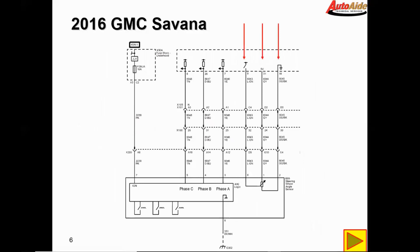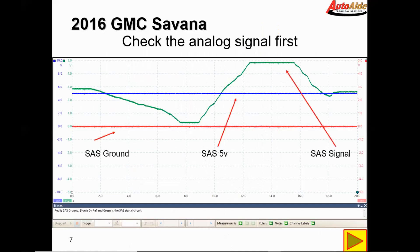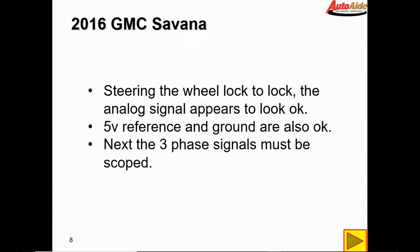Our first three circuits to scope are the 5 volt reference, ground circuit, and signal circuit. The steering angle sensor ground appears to be okay, the 5 volts is sitting right at 5 volts, and the signal appears to track good. Around 2.5 to 3 volts is center. As I turn the steering wheel to right lock it comes all the way down to about 0.5 volts, and going to left lock it goes up to about 4.5 volts, then back to center at 2.5 volts. The analog steering angle sensor appears to be reading correctly, so I don't think we have an issue with that one. The 5 volt reference and ground are also okay, so next the three phase signals must be scoped.